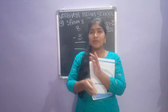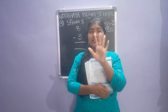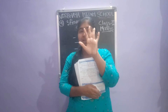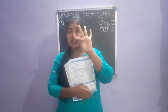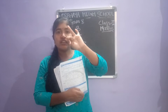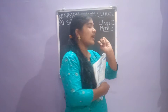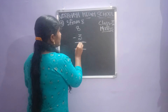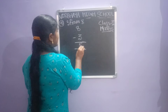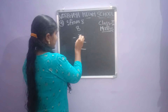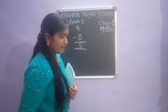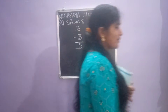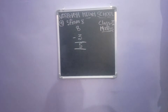After removing 3 fingers, how many fingers are remaining? 1, 2, 3, 4, 5. So 8 minus 3 equals 5. Copy in your classwork children.